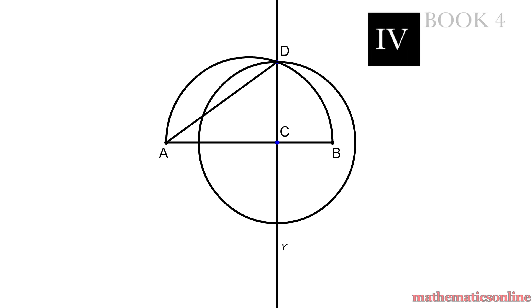and with center C construct a circle with radius CD. So now we are going to apply Book 4 Proposition 2, and inscribe an equilateral triangle in the given circle. So let's create the intersection point E, and we'll construct a circle with center E and radius EC, creating the intersection points F and G, and we'll create line FG.